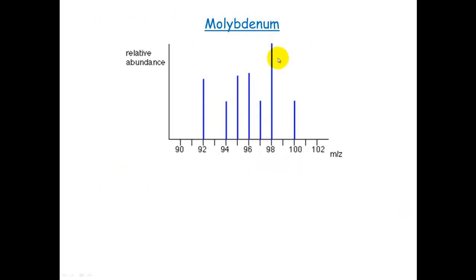Let's have a look here at molybdenum. This is a mass spectrometry graph that's being drawn of the various isotopes. And you can see here that there's seven different isotopes: 1, 2, 3, 4, 5, 6, 7.